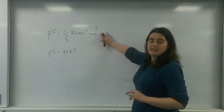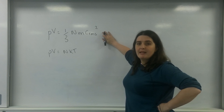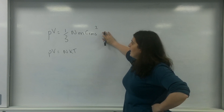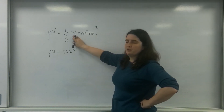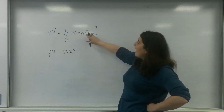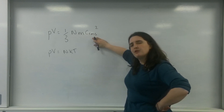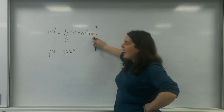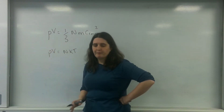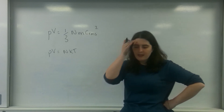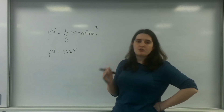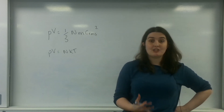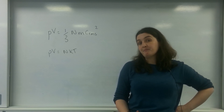This formula is the formula for kinetic theory. It talks about the fact that you have a number of particles, each with their mass and an average velocity in all three directions, and they will cause a pressure. What I want to do today is show you how we can get the kinetic energy formula from this.